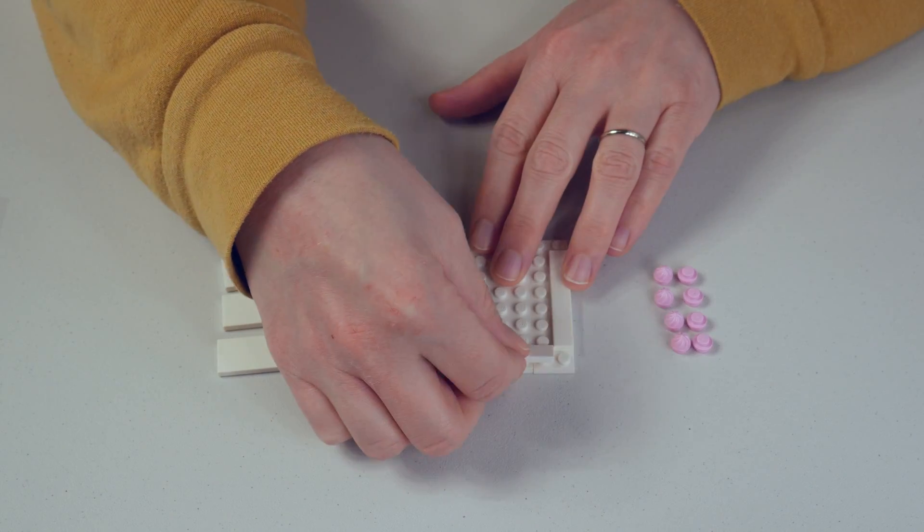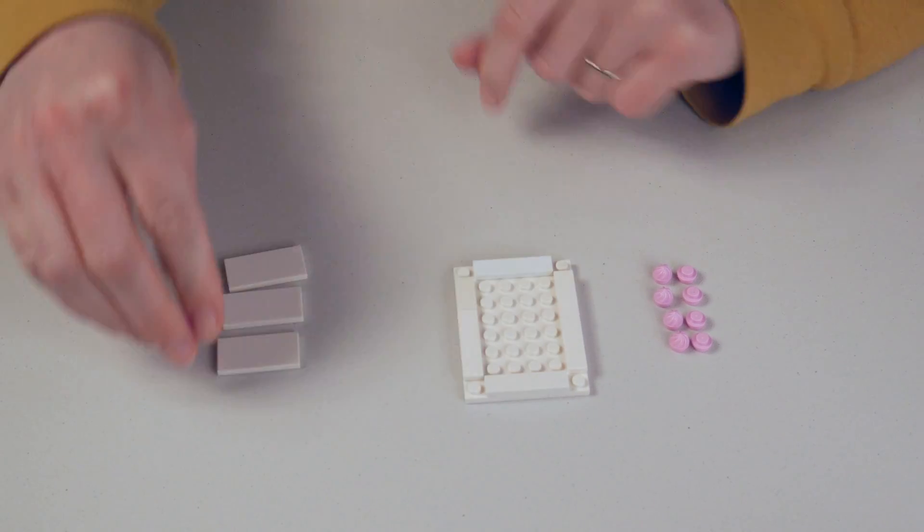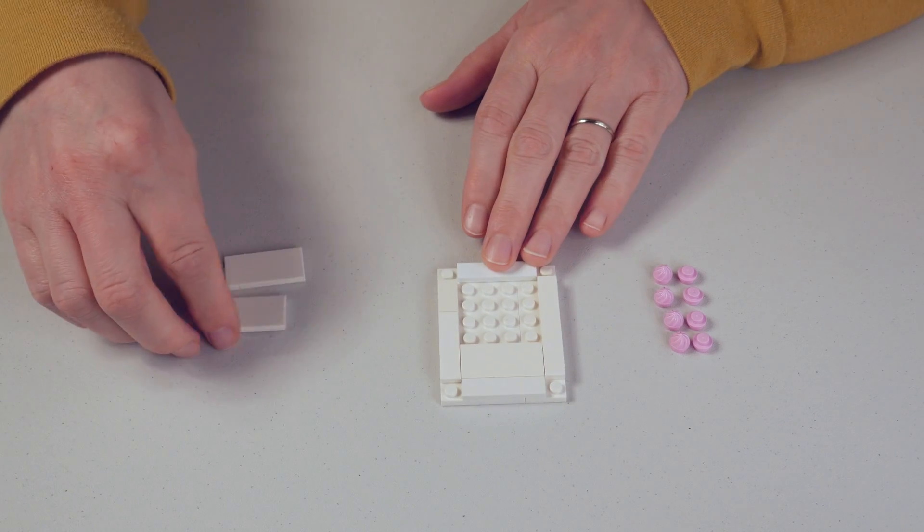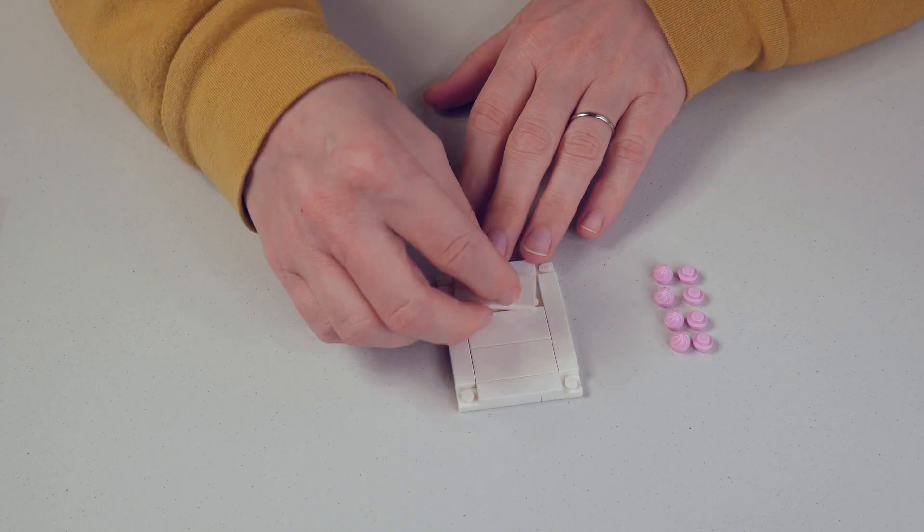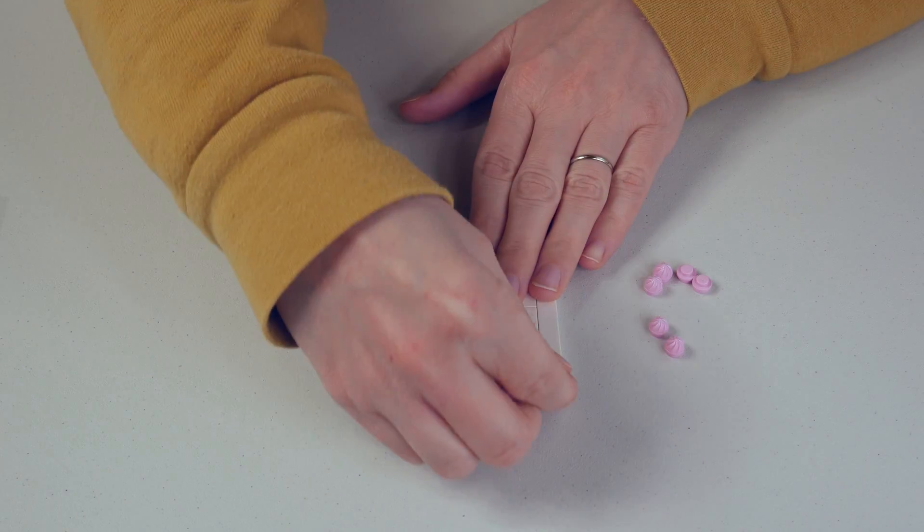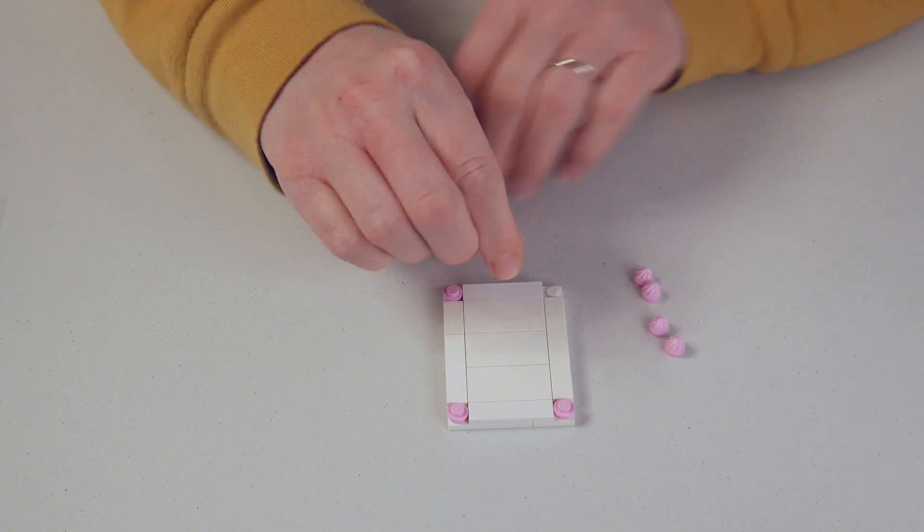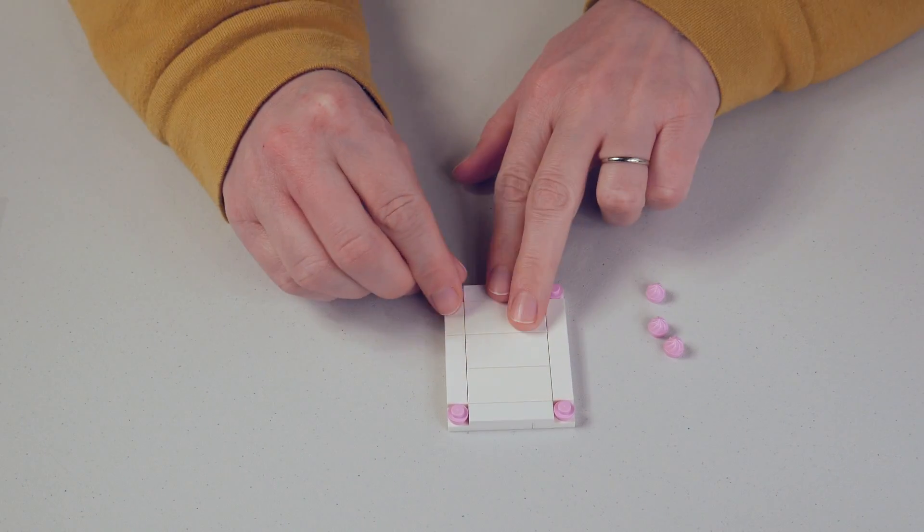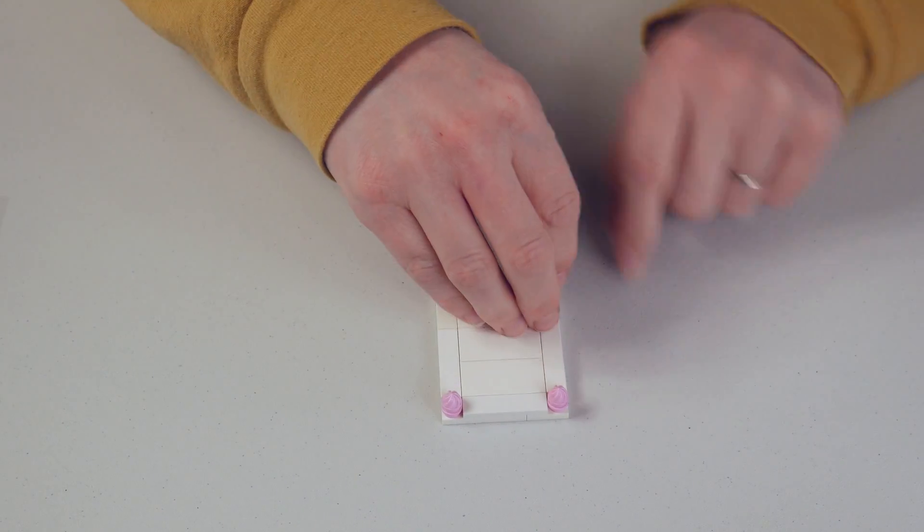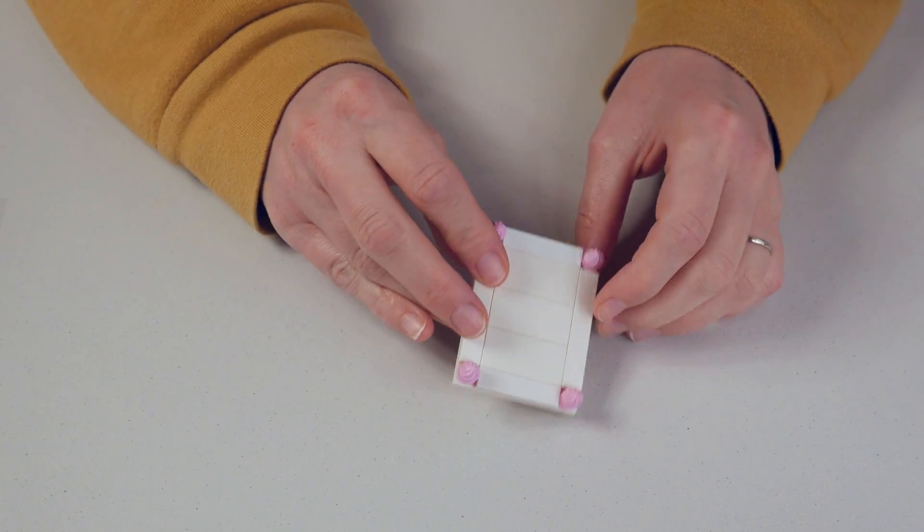So then another one by four here and you're leaving space on the corners, and then two by four plates in the center. Add round one by ones in pink on each corner and top it with one of these cupcake toppers. If you don't have these you could just use another pink round one by one.